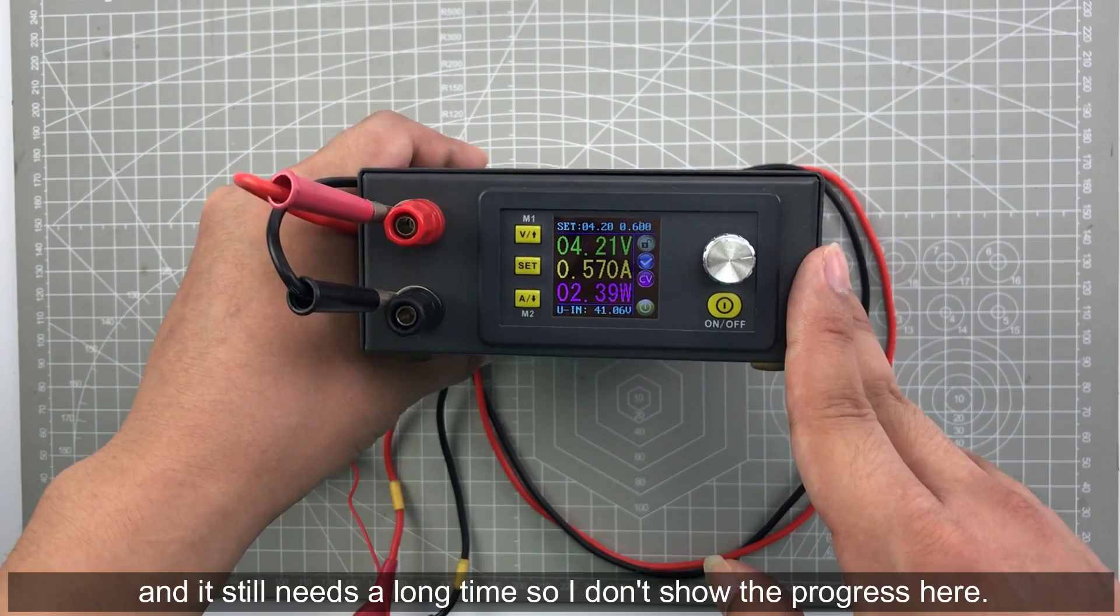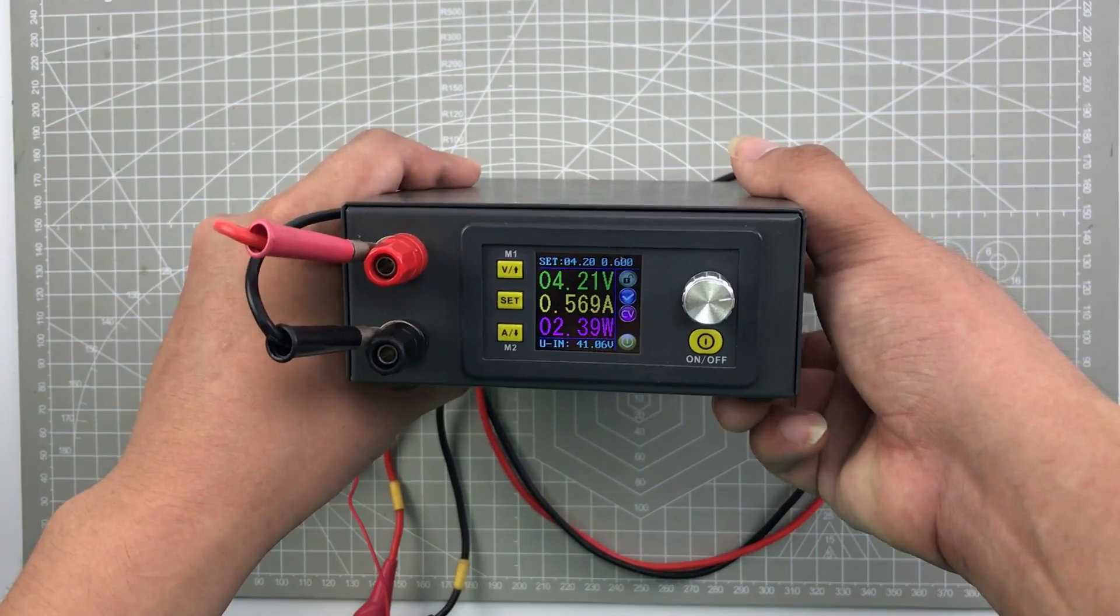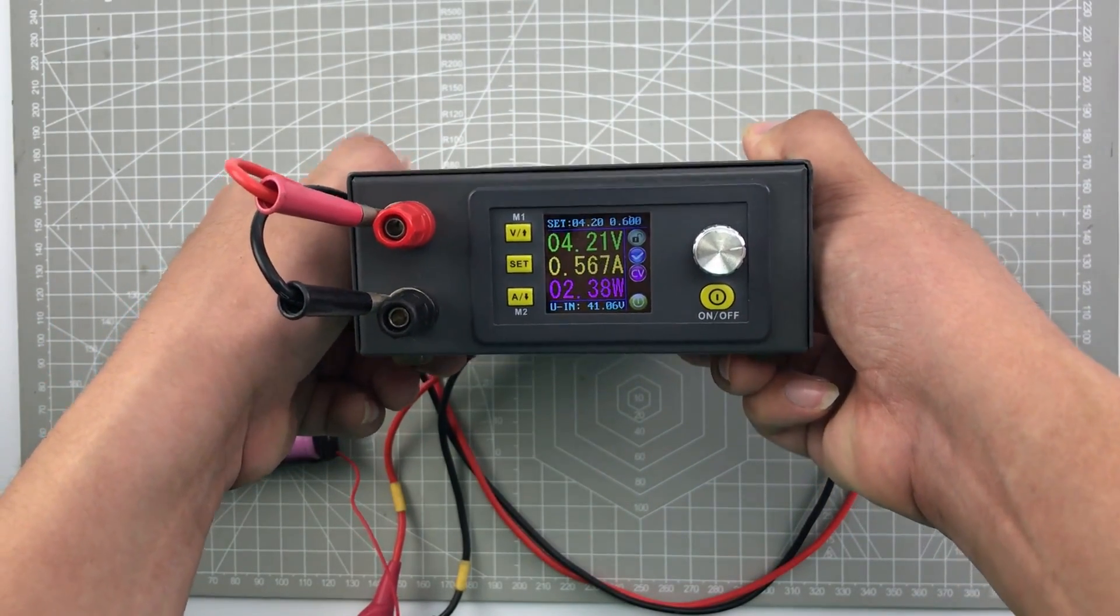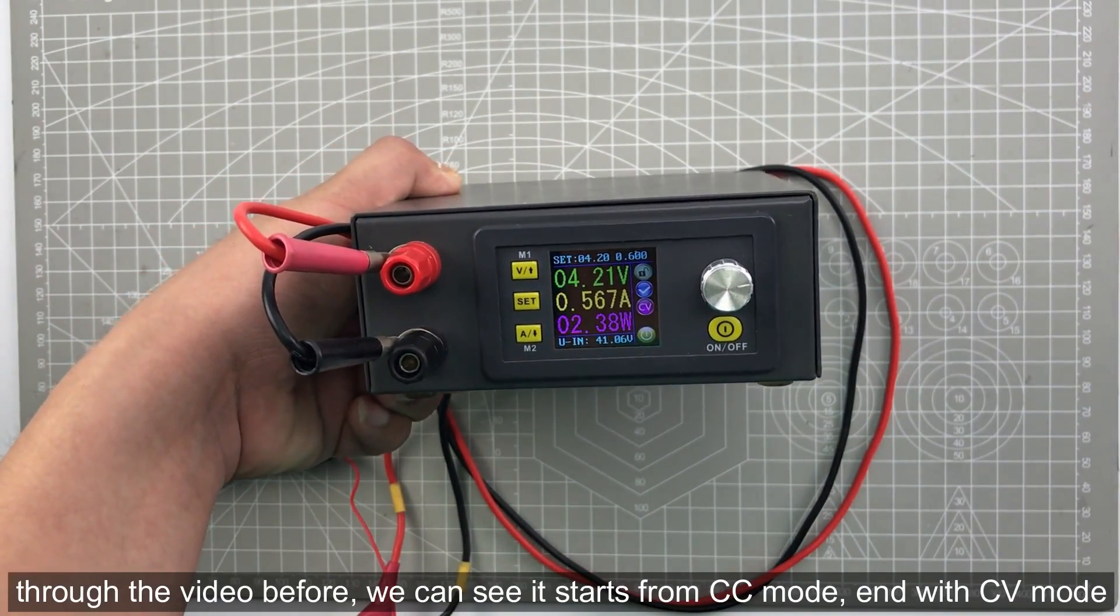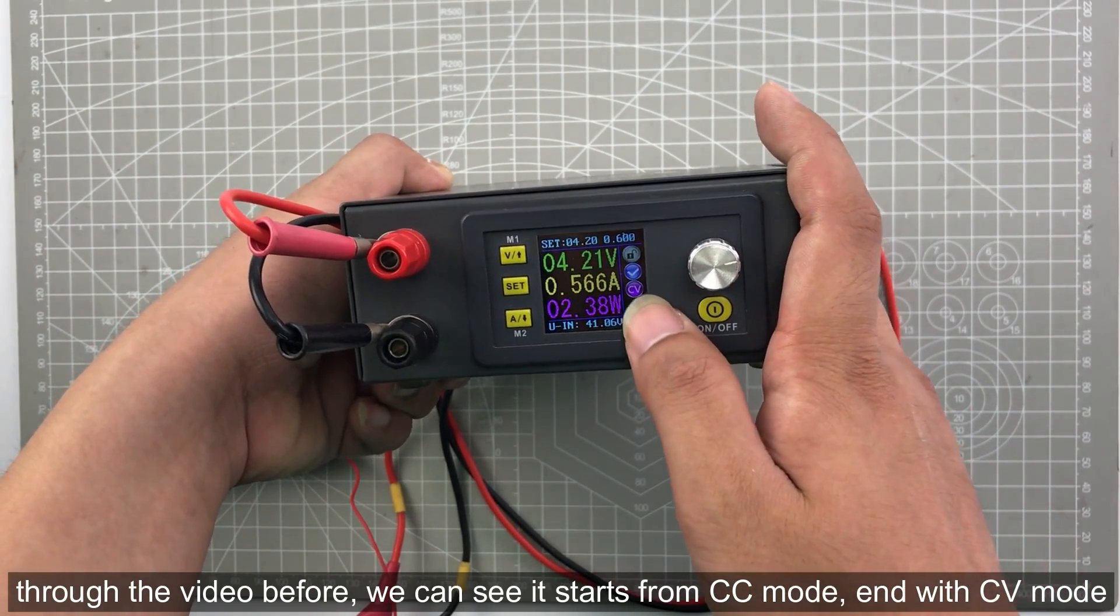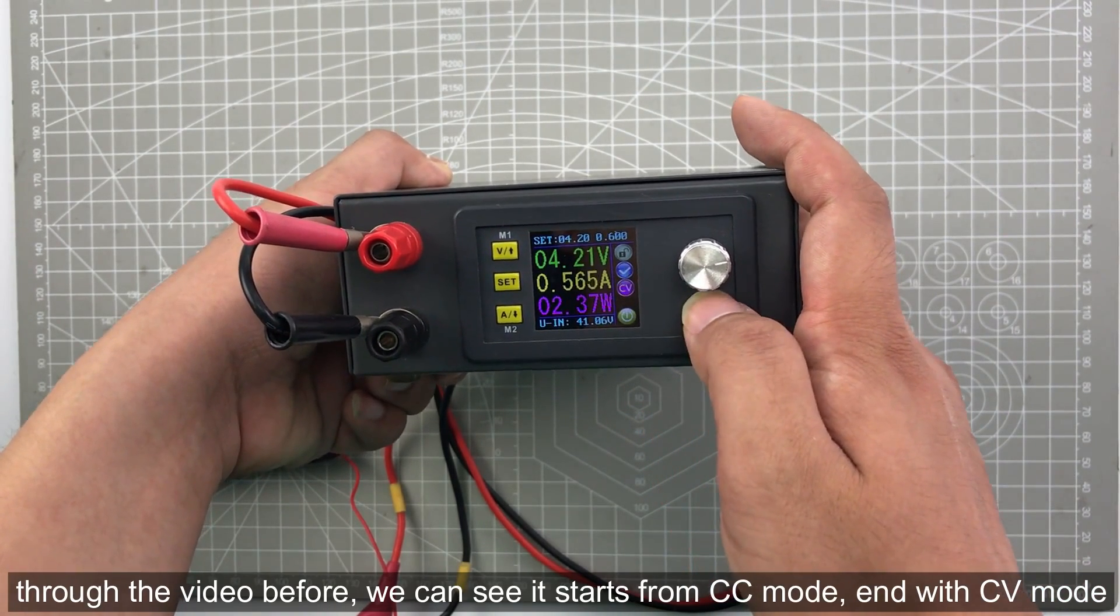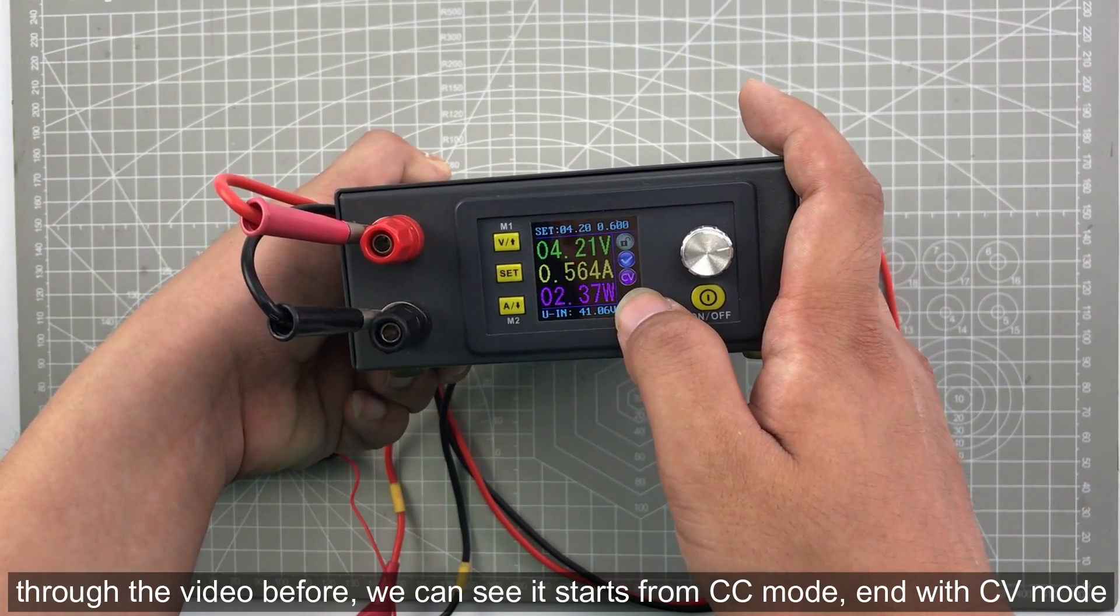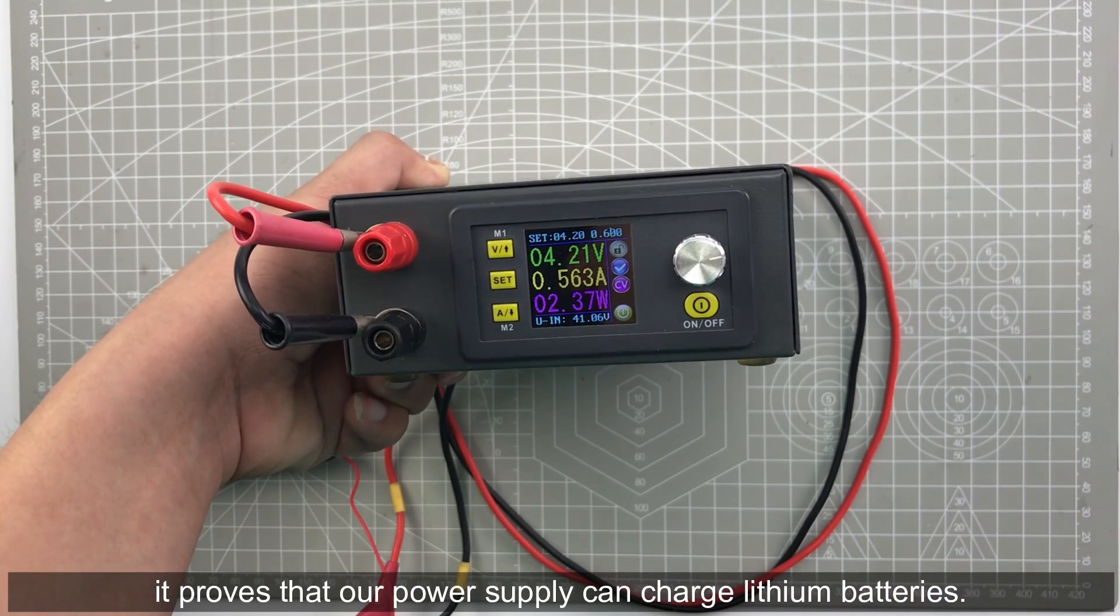And it still needs a long time, so I didn't display the progress here. Through the videos before, we can see the whole charging progress. The battery charging starts with constant current CC and ends with constant voltage CV. It proves that our power supply can charge a lithium battery.